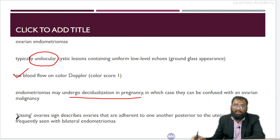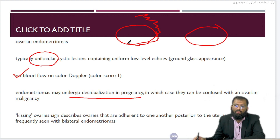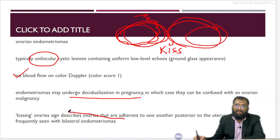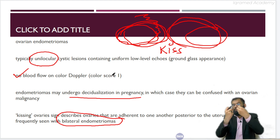What can happen is, suppose this is one ovary and this is another ovary. There will be excessive fibrosis surrounding the ovaries, and the ovaries keep on enlarging with fibrotic change. There occurs a stage where the ovaries might come together — and this is classic. This is called kissing ovaries. Whenever there is bilateral chocolate cyst, bilateral endometriomas, you would get kissing ovaries, where both ovaries come together.